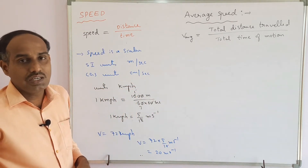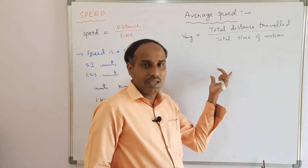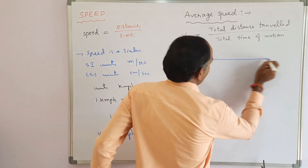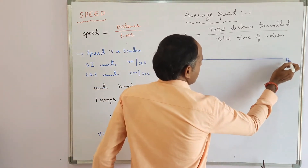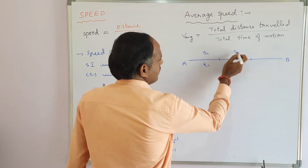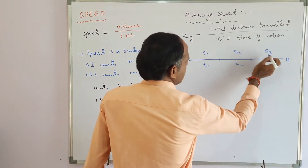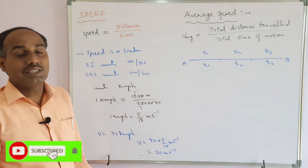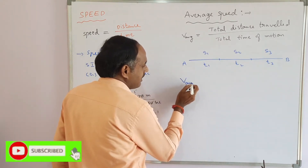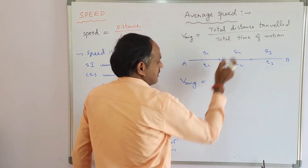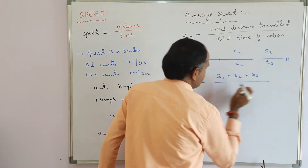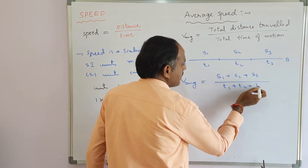Average speed is defined as the total distance traveled by a body divided by the total time interval taken for its journey. For example, if a body moves along a straight line from A to B, covering distance s1 in time t1, s2 in time t2, and s3 in time t3, then average speed = (s1 + s2 + s3) / (t1 + t2 + t3).